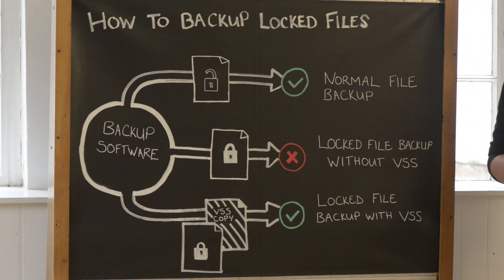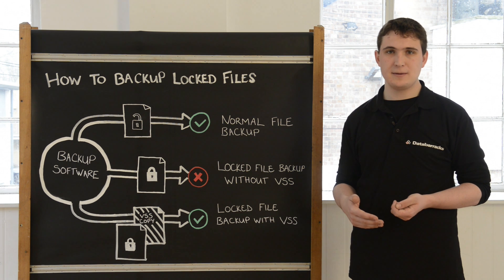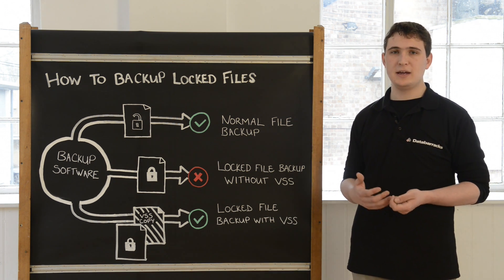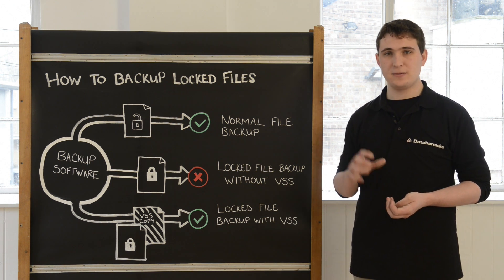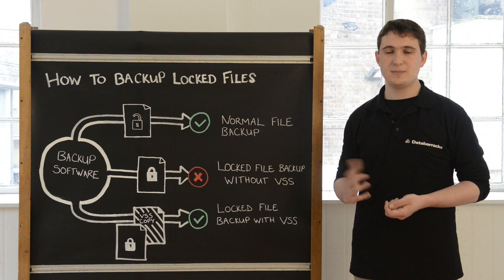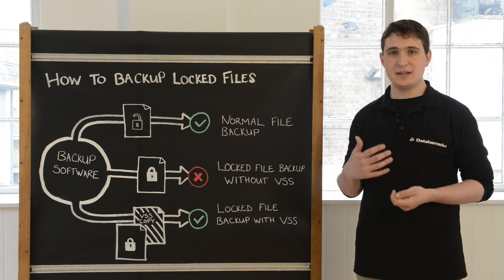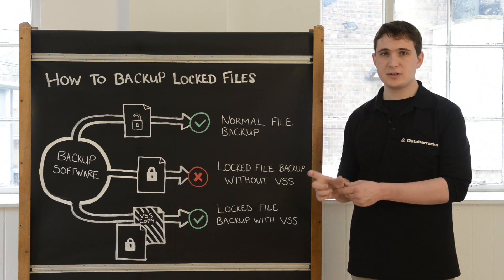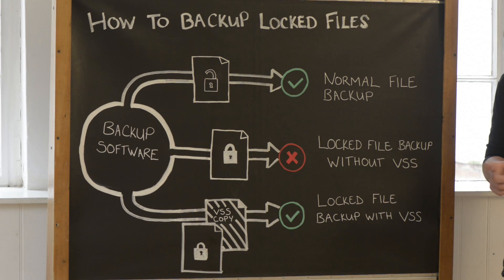VSS has good features and bad features. VSS can be flaky or it can sometimes fail, and the main reason is that it can only be called upon by one service at a time. So if you have two or three backup applications all trying to request the use of VSS on the same server at the same time, one or two may fail and one may succeed. VSS also uses a small part of the storage on your SAN or your server, so you will have to allocate a little bit of space for the volume shadow copies to be created.